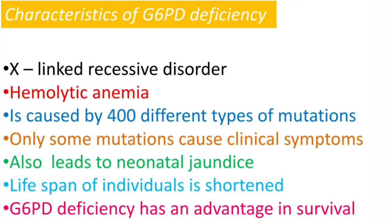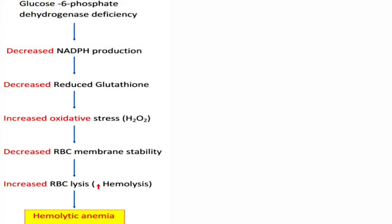Only some mutations show clinical symptoms. In addition to hemolytic anemia, G6PD deficiency also leads to neonatal jaundice, seen after one to four days of birth. The lifespan of individuals with G6PD deficiency is shortened. However, G6PD deficiency has a survival advantage: patients have increased resistance to malaria, as shown by female carriers of the mutation — similar to sickle cell anemia and thalassemia.